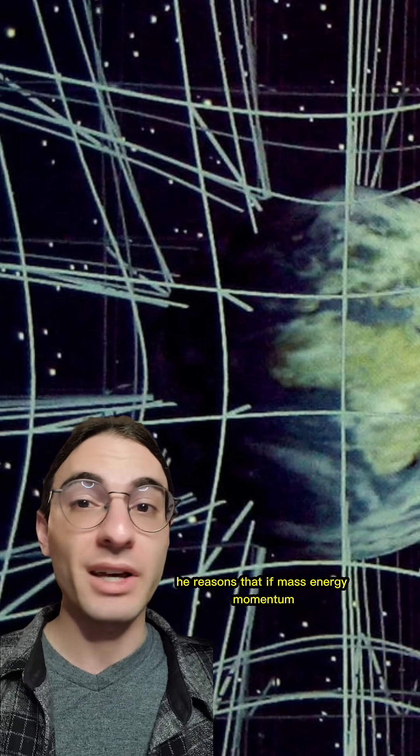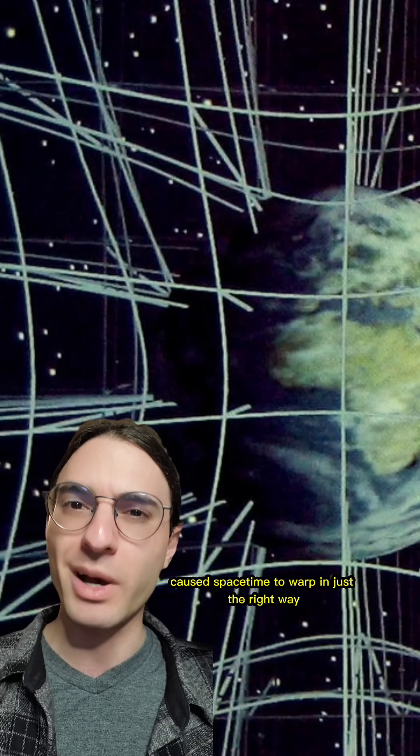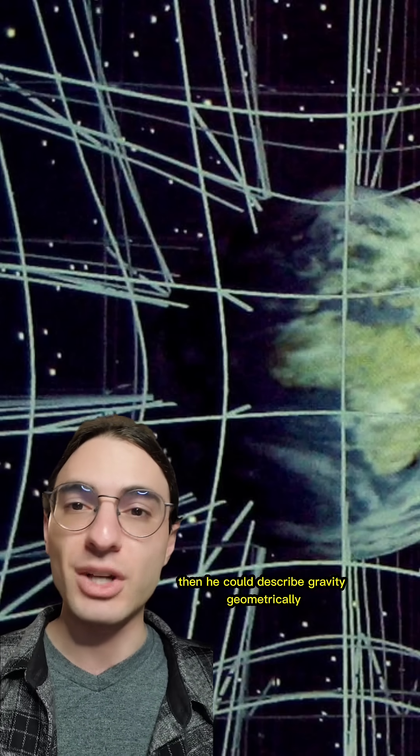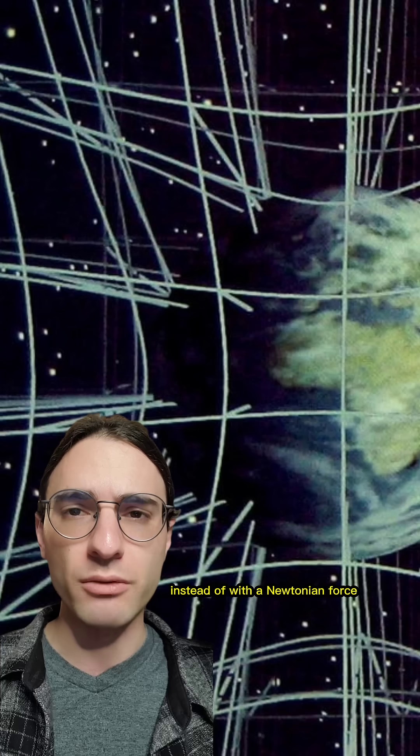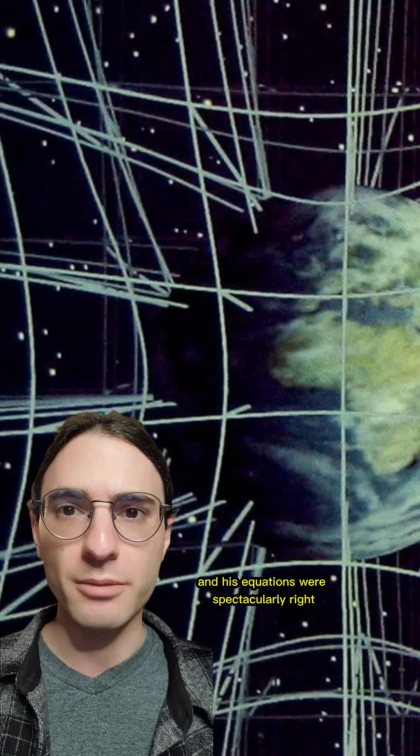He reasoned that if mass, energy, momentum, pressure, and stress caused spacetime to warp in just the right way, then he could describe gravity geometrically instead of with a Newtonian force. And his equations were spectacularly right.